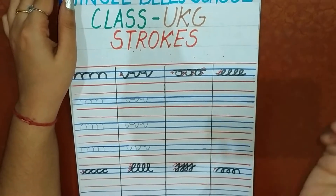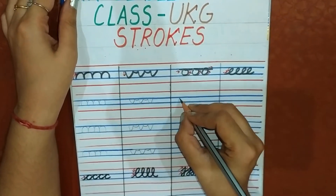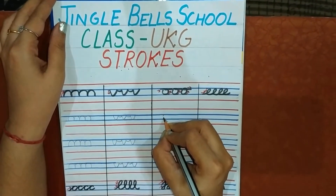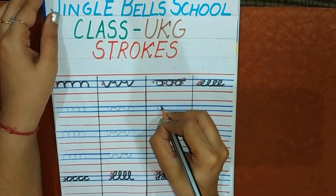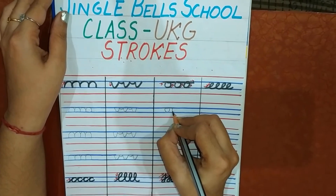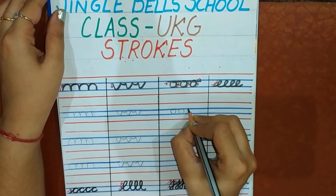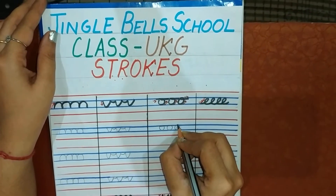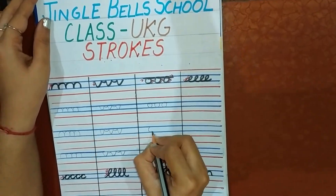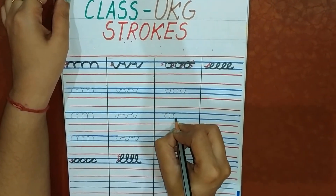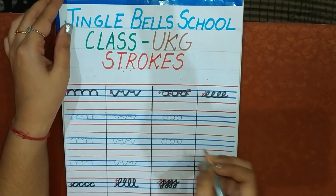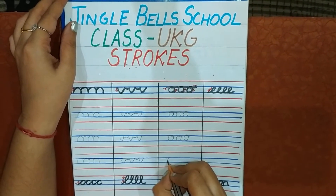Now come to the next stroke — that is cursive O. First, a seeping line, then make a circle like this. Then once again, make a circle. Then make a circle like this. Follow me — how I am drawing, you have to draw like this only.